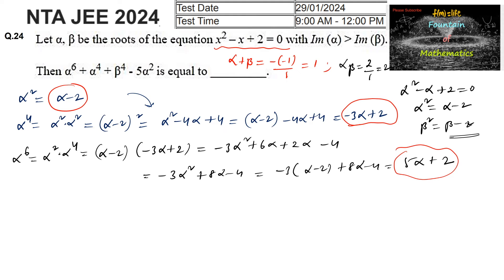For beta⁴, similarly to alpha⁴, since beta is also a root of the same equation, we get beta⁴ = -3beta + 2.